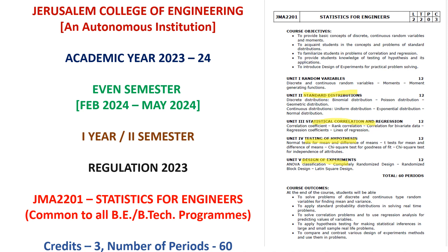The order in which we shall be following this paper would be Unit 3 first, then Unit 5, then Unit 4, and then Units 1 and 2. So the order is: Unit 3 — statistical correlation and regression first, then Unit 5 — design of experiments, then Unit 4 — testing of hypothesis, then Unit 1 — random variables, and Unit 2 — standard distributions. This is how we are going to take it forward.